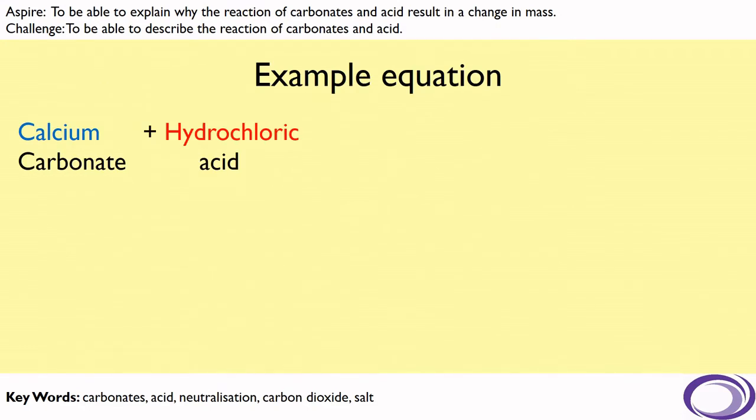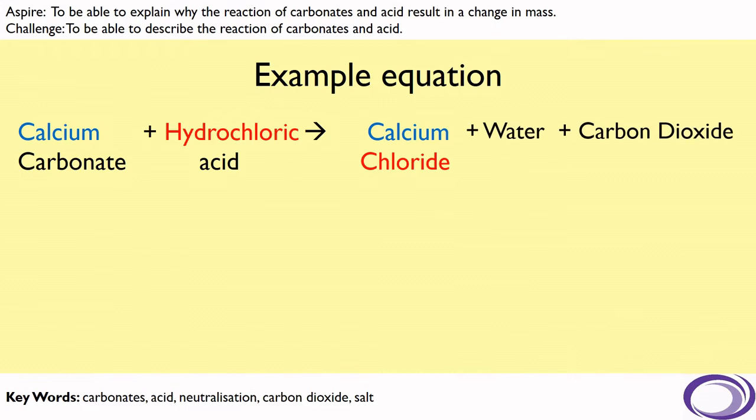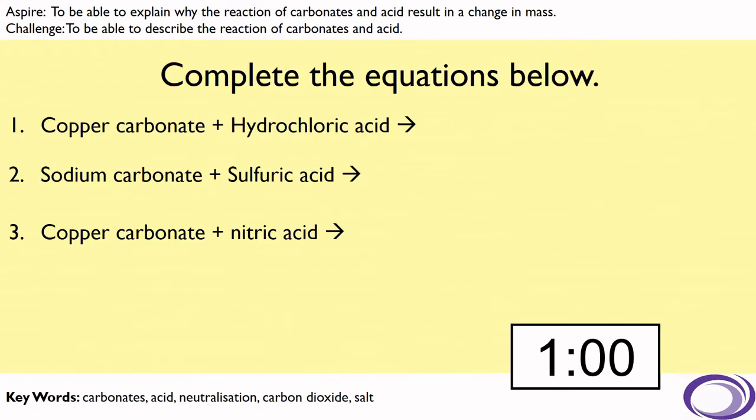Now, an example equation for this: if calcium carbonate and hydrochloric acid were to react, the salt we would form would be calcium chloride. Remember, the first part of the salt comes from the metal in the carbonate, and the second part comes from the acid which was used. Because it's a metal carbonate that reacted, we will also form water and carbon dioxide gas. Now, I'd like you to use that general equation to complete the equations below.